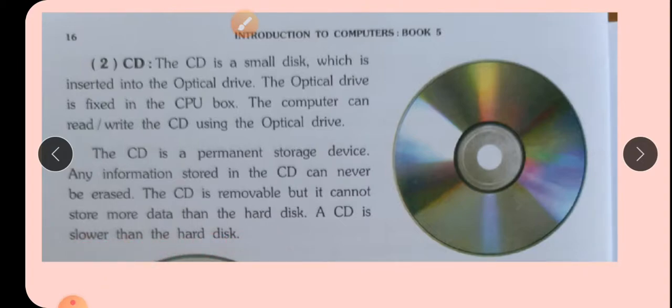The CD is removable but it cannot store more data than the hard disk. A CD is slower than the hard disk. CD removable तो है, hard disk कैसे है permanent है उसको बार बार निकाल नहीं सकते. But hard disk में हम बहुत information stored कर सकते हैं whereas in CD हम information बहुत कम store कर सकते हैं. And hard disk works much faster than CD.